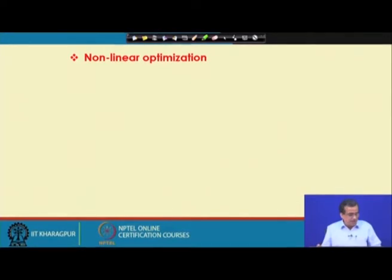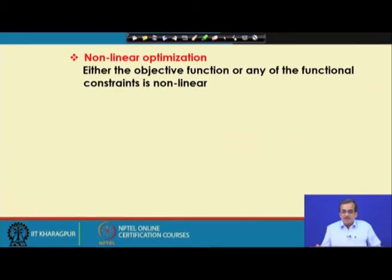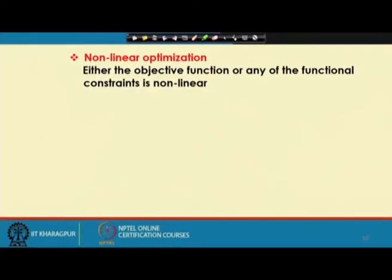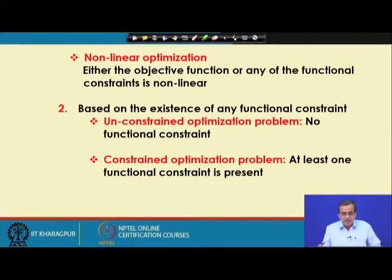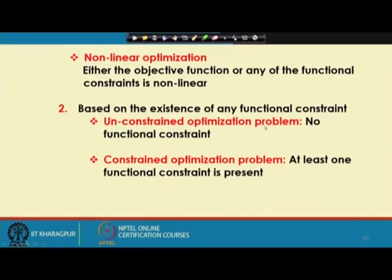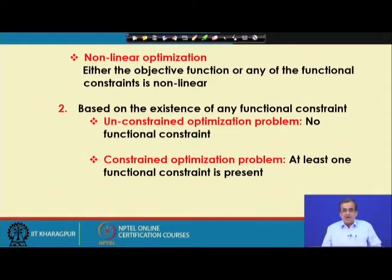For a non-linear optimization problem, either the objective function or any one of the functional constraints, or both, will be non-linear functions of the design variables. The second classification is based on the presence of functional constraints. If there is no such functional constraint, it is called an unconstrained optimization problem. If there is at least one functional constraint, it is called a constrained optimization problem. The side constraint or geometric bound must be present for all optimization problems; otherwise, it cannot be defined.